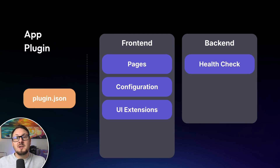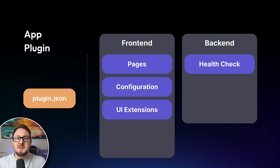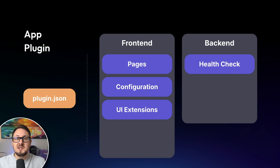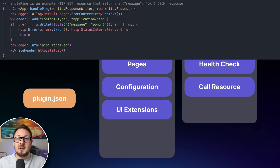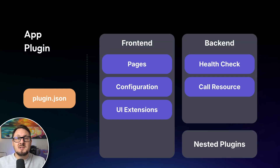Moving over to the back-end components, developers can define a server-side health check, which can return a success or failure status indicating the health of the app. This can be a great way to ensure that your plugin is working correctly and has the appropriate configuration. Apps can handle server-side logic, such as making external API calls or processing data. Resource handlers can be created to expose HTTP endpoints, which can be called by the front-end to receive the results of these server-side interactions. Unique to app plugins is the concept of nested plugins — you may wish to bundle new data sources or panel plugins in order to create a bespoke experience for your app. With app plugins, the possibilities are virtually endless when it comes to creating custom experiences within Grafana.